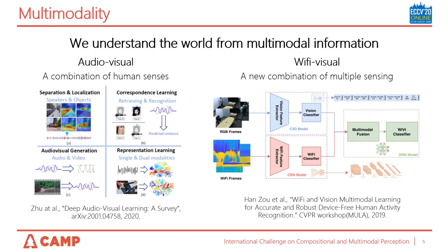On the other hand, people understand the world not only from vision. We use multimodal information from many human senses — for example, eyes and ears. In recent years, not only human senses but there have also been advances in learning from multimodal data like Wi-Fi. Multimodal recognition provides benefits in recognition under noisy conditions like partial occlusion.